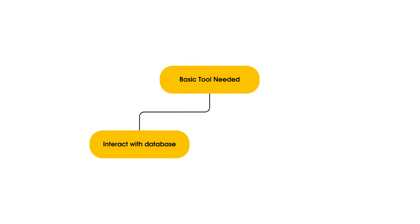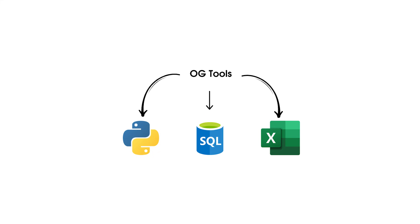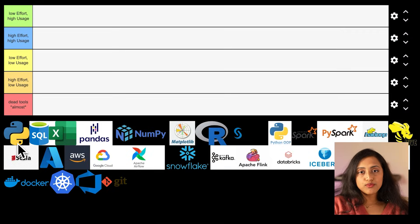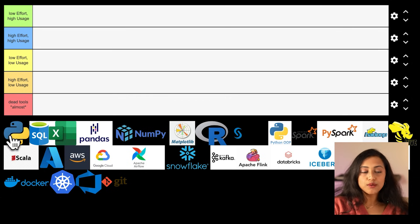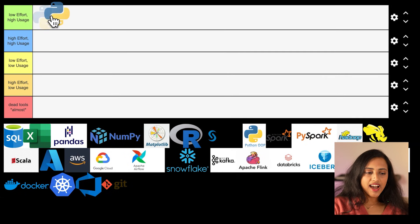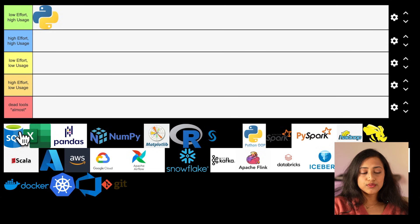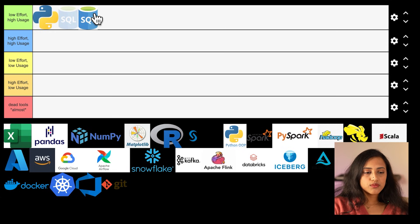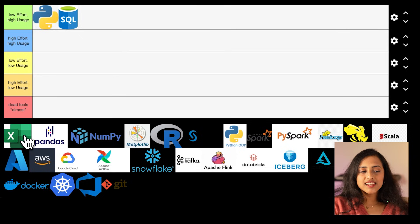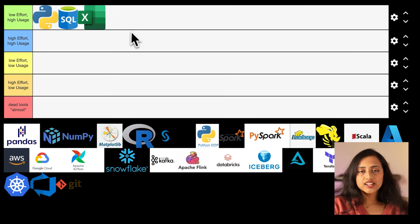The most basic tools needed are a way to interact with the database, transform data, and understand how it looks. The OG tools needed are Python, SQL, and Excel. Python is used industry-wide for almost all data science and data engineering tasks, so I would rate Python as low effort and high usage. Similarly, SQL is used to interact with the database, so rating SQL as low effort, high usage. Excel is used to simply see how the data looks when you want to conduct some simple analysis, so Excel is also low effort and high usage.